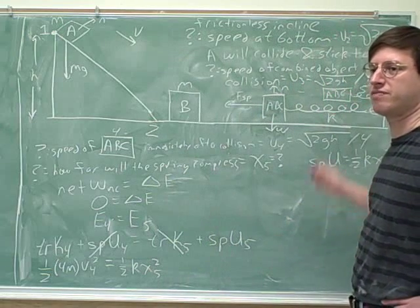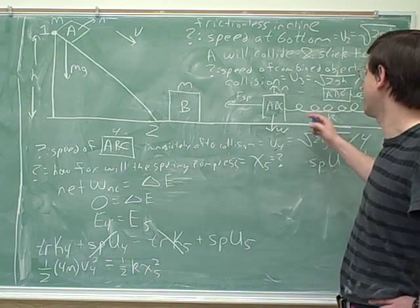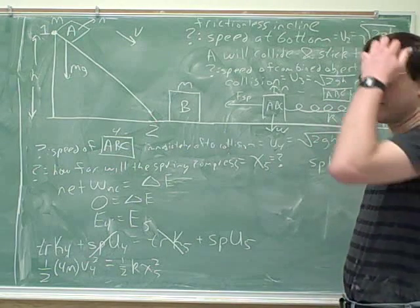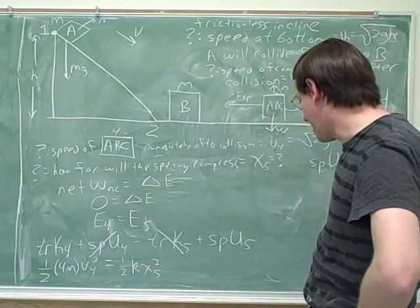I should have said that the spring had a spring constant of k. Usually in the problem, you'll be given any variables that you're supposed to use in your answer. So the problem would probably have told you that the spring has a spring constant of k. Because that tells you that you're allowed to use that variable in your answer.